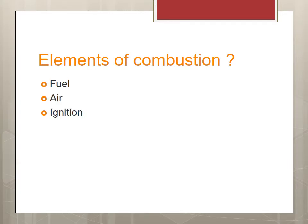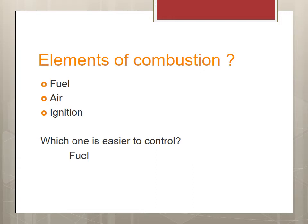We need fuel, air, and ignition — those three components are essential to having any kind of combustion or fire. The easiest thing to control is the fuel. Air is all around us, so it's really hard to control. Ignition is also a problem to control because once we ignite the fuel it's really difficult to extinguish. Fuel is the easiest way to control — just like a bonfire, you stop putting fuel in.